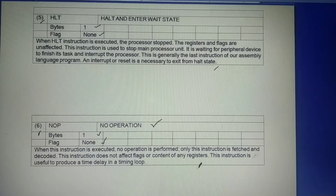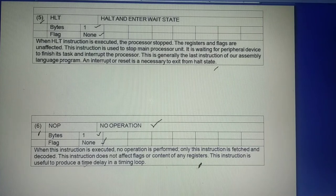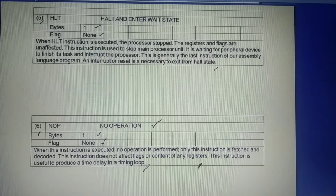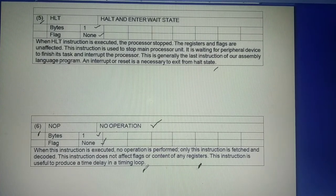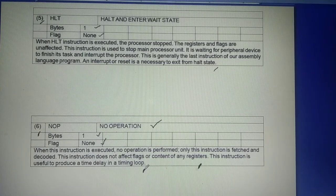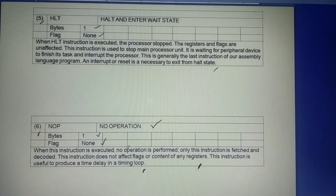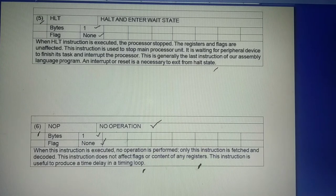This instruction is useful to produce a time delay in a timing loop. That means if a time delay is required in any part of the program, then put the NOP instruction in a loop, and it will execute for however long that time delay requires.